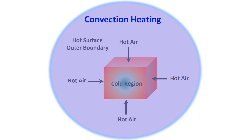Thus, the center of the cube would be the cold point. From these two examples, we can understand that the conventional surface heating process is non-uniform and a temperature gradient exists in the food.